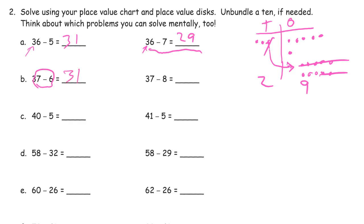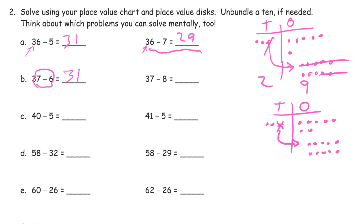And now we have 37 minus 8. On the chart — tens and ones — we have 3 tens and 7 ones. We're going to subtract 8, but we can't cross out 8, so we have to break up a 10. We unbundle the 10 into 10 ones, then subtract 8, crossing out all except 2 of them. What do we have left? 2 tens and 9 ones — 29.